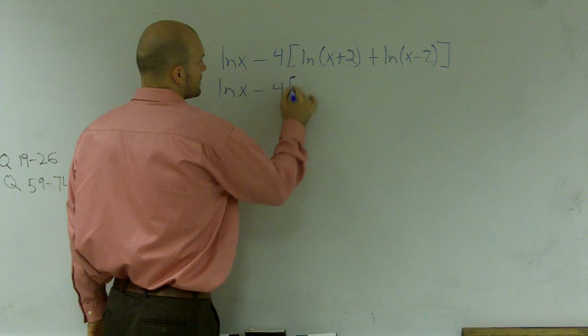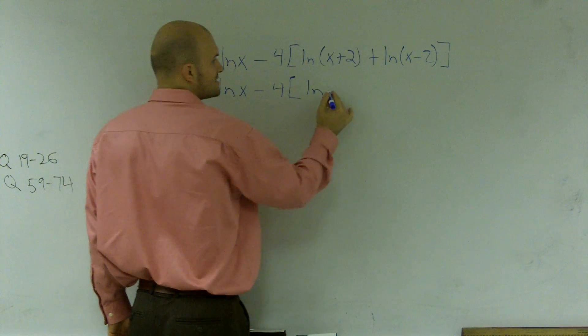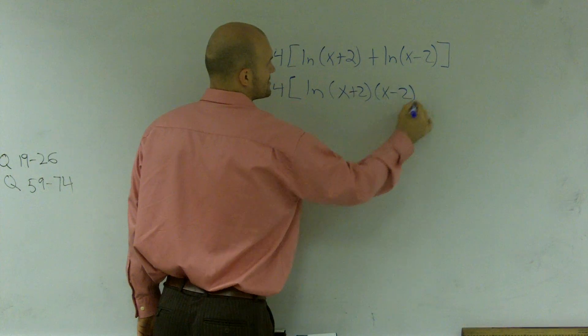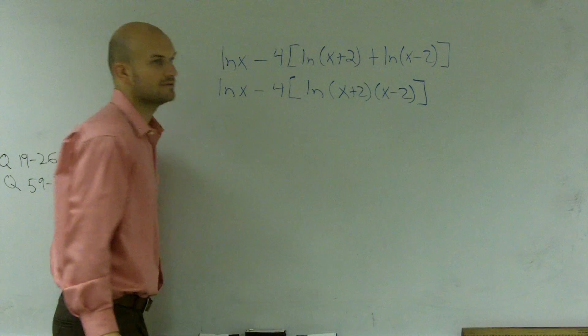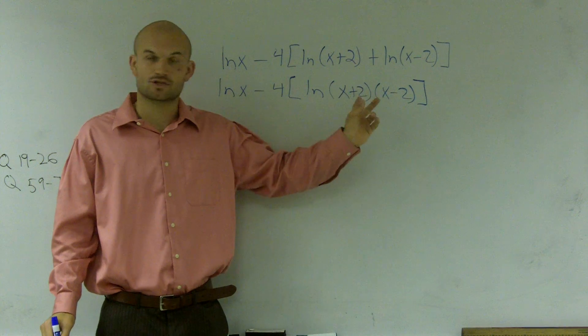ln of x minus 4 bracket ln. Now remember, addition - I can rewrite this as (x plus 2) times (x minus 2), right? And then this is a difference of two squares, so I can rewrite this as x squared minus 4.